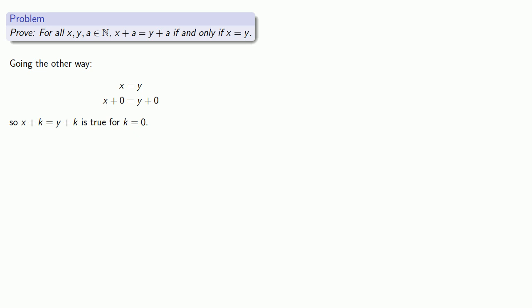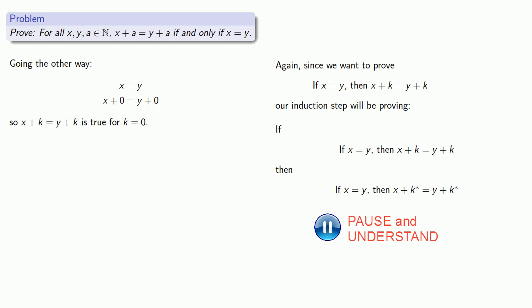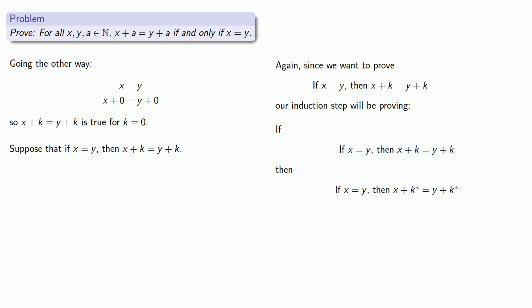Our induction step is a little complicated to state, but we can take it one step at a time. Since we want to prove that if x equals y, then x plus k equals y plus k, our induction step will be proving that if this is true for k, then it's true for k*. We can always assume the antecedent of a conditional, so suppose that if x equals y, then x plus k equals y plus k. Assuming x equals y, the conditional tells us that x plus k is equal to y plus k.